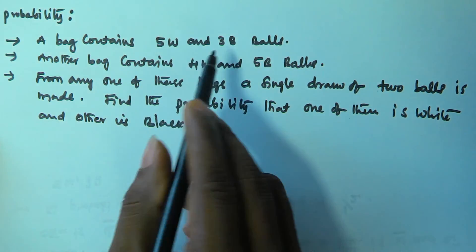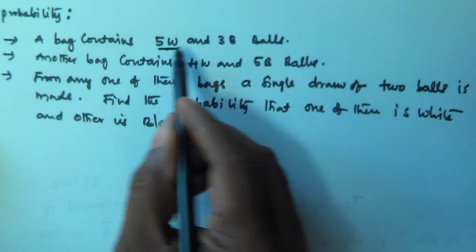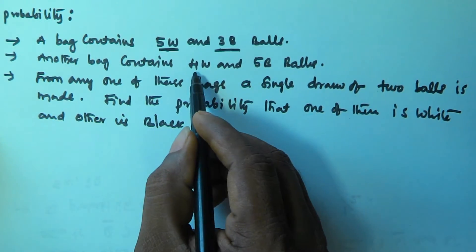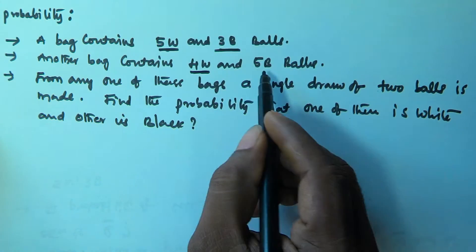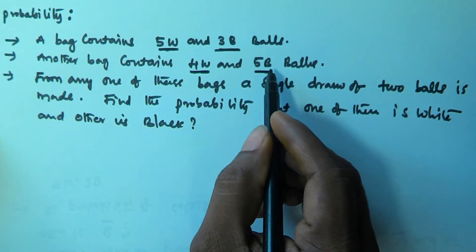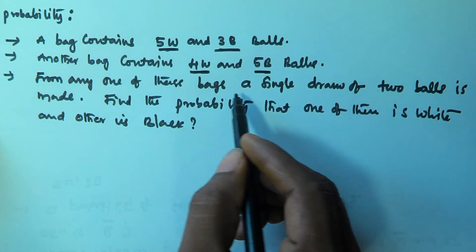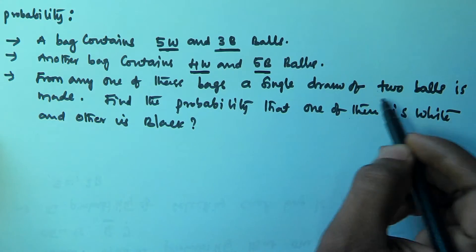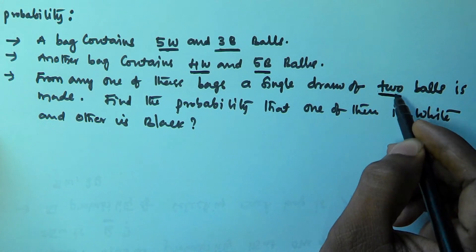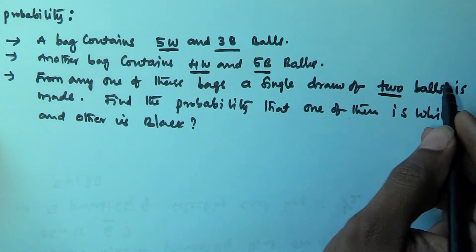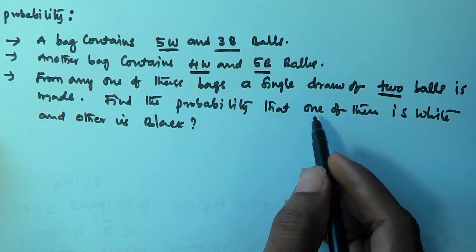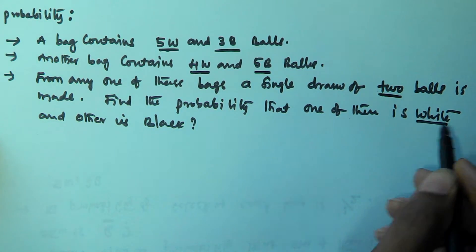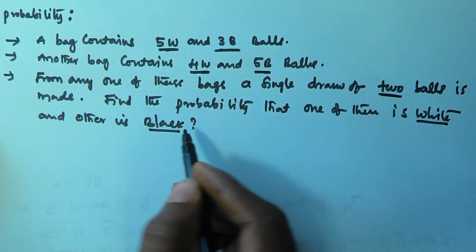So we have 2 bags. The first bag contains 5 white balls and 3 black balls, and the second bag contains 4 white balls and 5 black balls. From any one of these 2 bags, a single draw of 2 balls is made. Find the probability that one of them is white and the other is black.